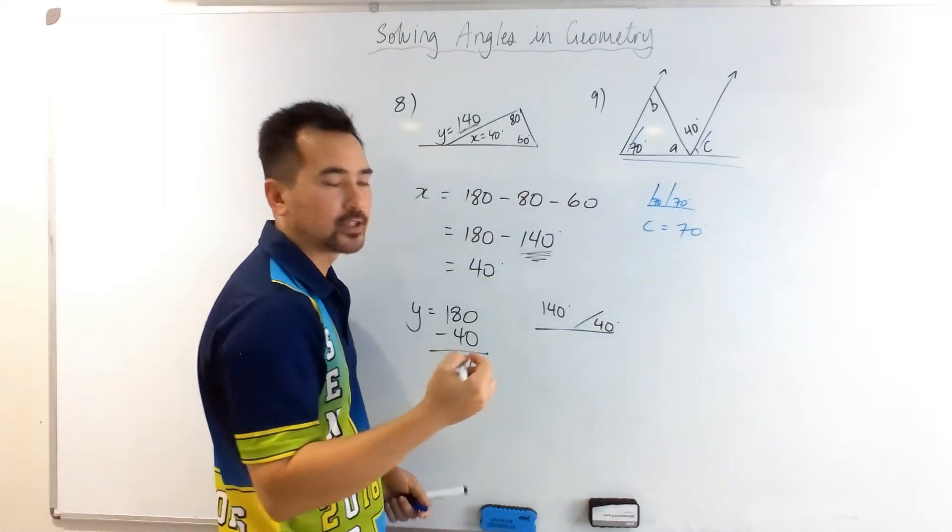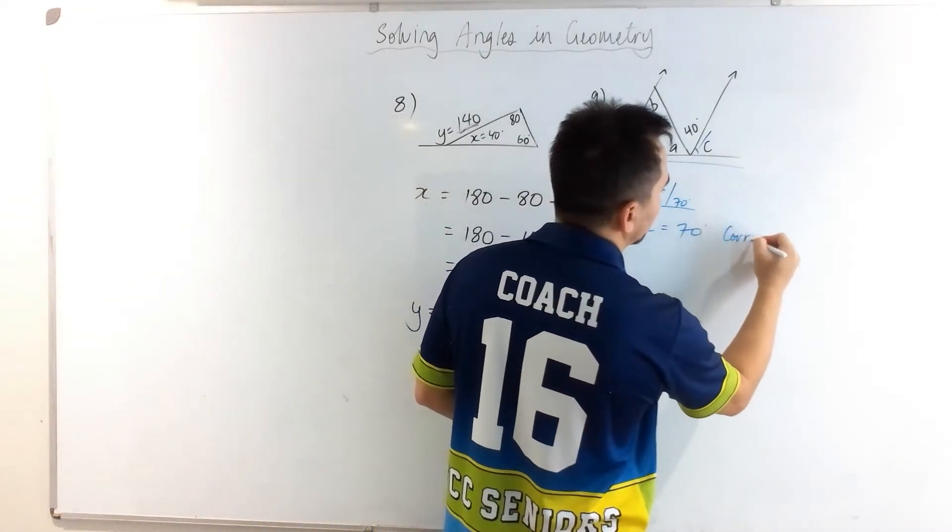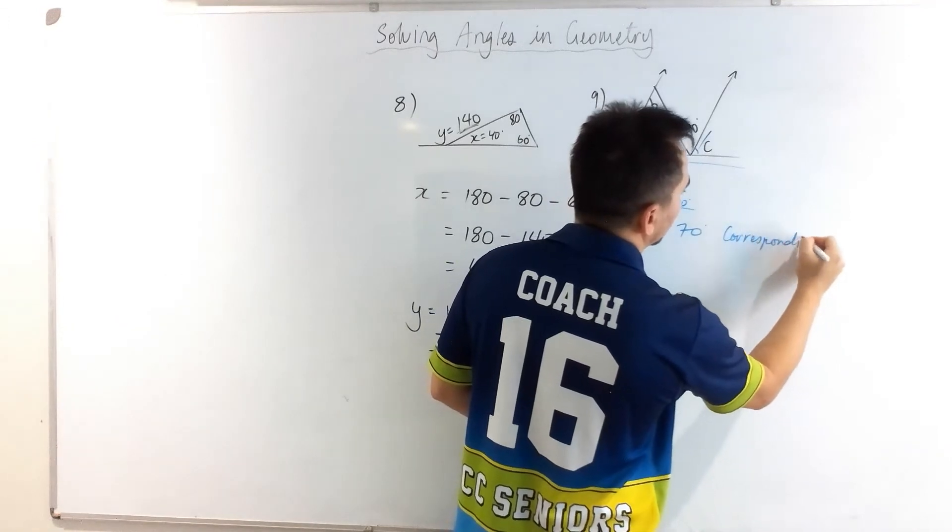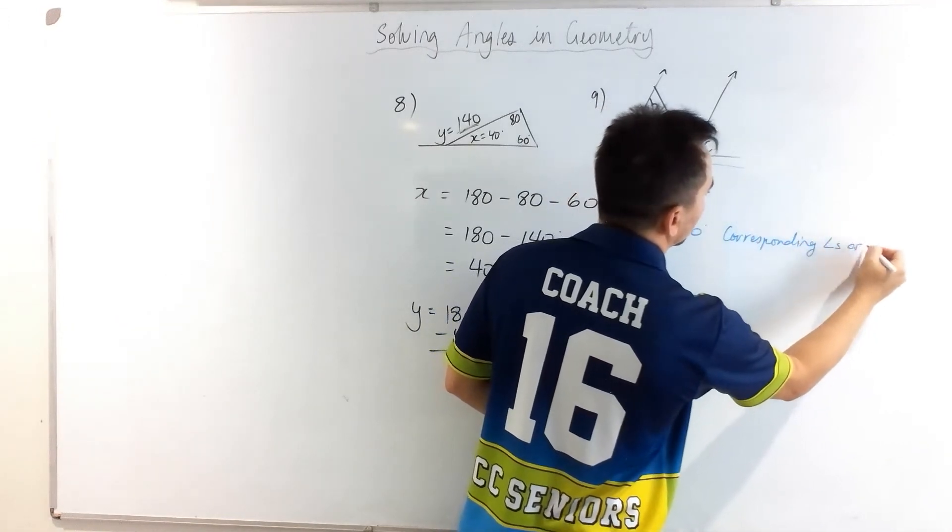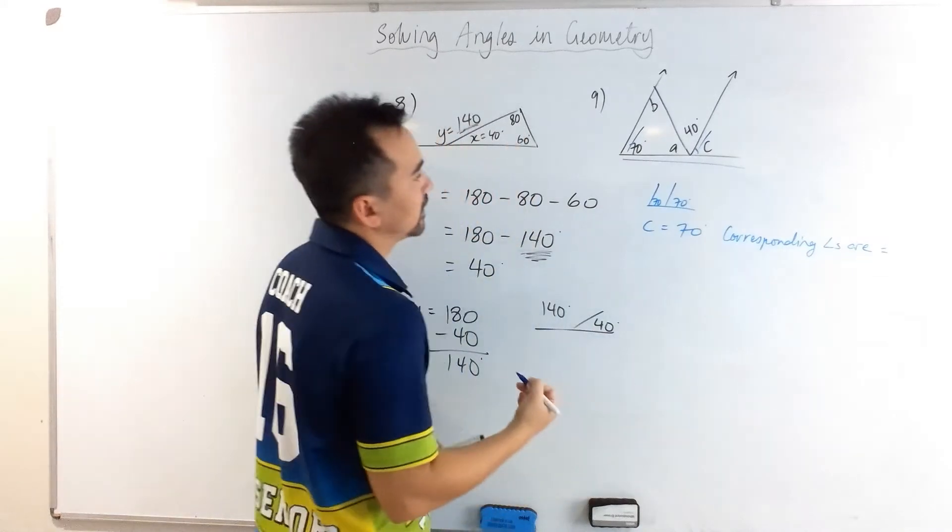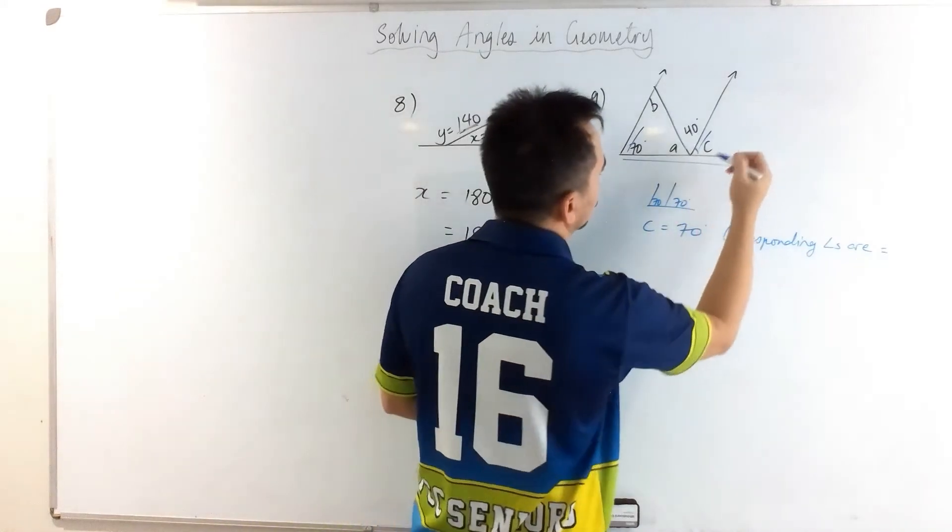And your reasoning to go with that is the f-rule, which is called corresponding angles are equal. Okay, so this is 70 degrees.